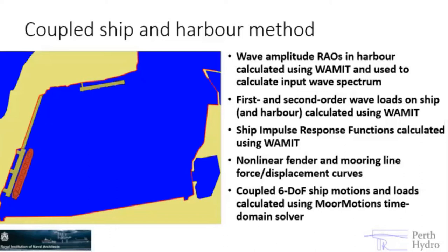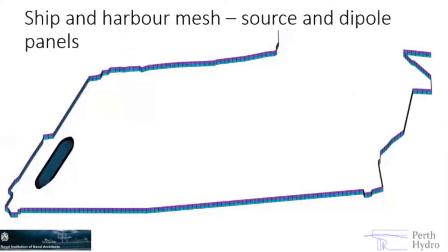We use the impulse response functions and put in external effects like fenders and mooring lines — all of which can be non-linear — and then calculate the six degree of freedom motions using the time domain solver. Here's an example mesh for a ship at Berth 5: the ship is meshed using a standard surface mesh of a couple of thousand panels up to the waterline, and the harbour is meshed using a dipole mesh around the outside. So we're really interested in what goes on inside the harbour — it's an almost fully enclosed harbour where the waves within and the wave loads on the ship can be calculated.